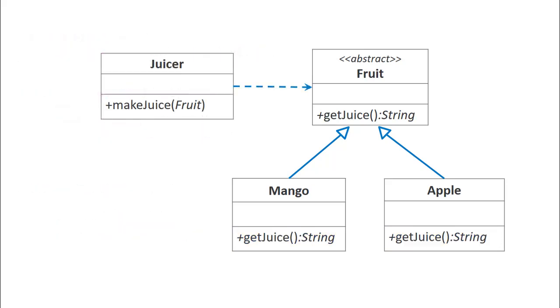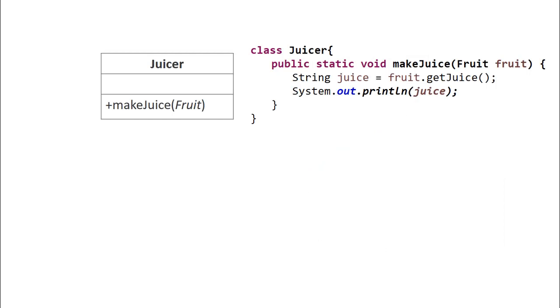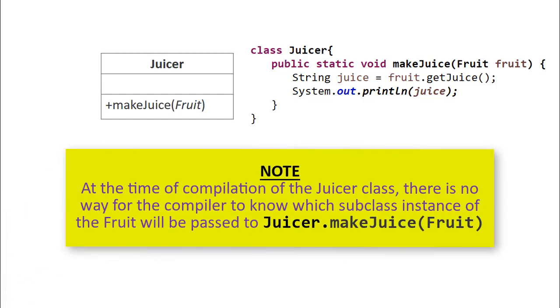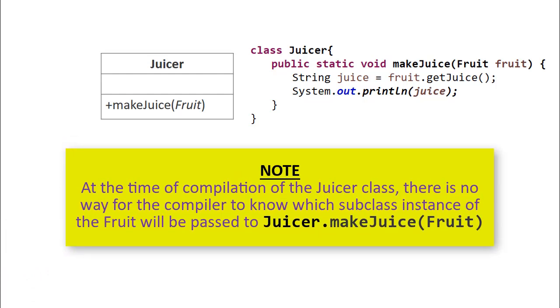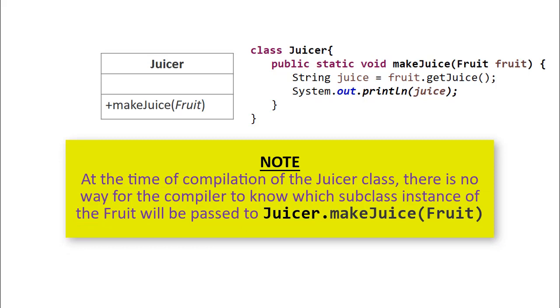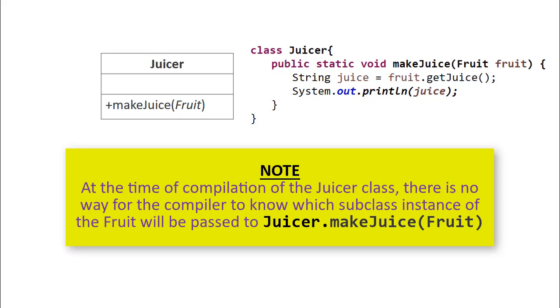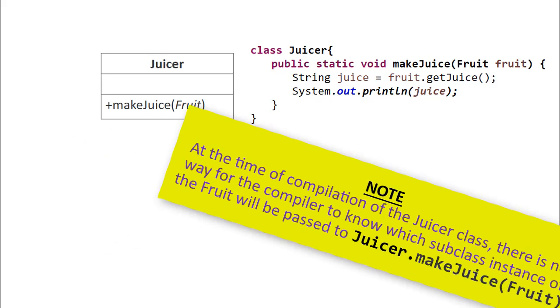Next, let us code for the juicer class. MakeJuice method takes the object of fruit class. However, fruit being abstract class, the object that will actually get passed here will be any of its subclasses. Now, the most important thing to note here is that, at the time of compilation of the juicer class, there is no way for the compiler to know which subclass instance of fruit is going to be passed to the makeJuice.